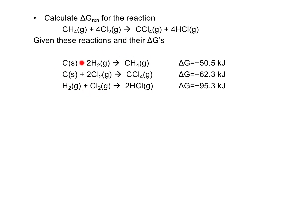The way I usually approach these problems is systematically. I start with the first reactant in the reaction I'm trying to reproduce and see if I can find it in any of the given reactions. When I look at all these reactions, the only one that has methane, CH4, is this one — but it's on the wrong side. So I want to swap the reactants and products for this reaction so that methane will be on the reactant side.